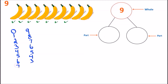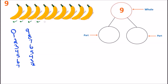Keep counting: one, two, three, four, five, six, and seven — we have the number seven. How many bananas remain? One and two — we have two bananas. Before we had a two and a seven; now we have a seven and a two. Seven is on the left side and two is on the right side. Both give us the number nine — two separate number bonds, both equal nine.